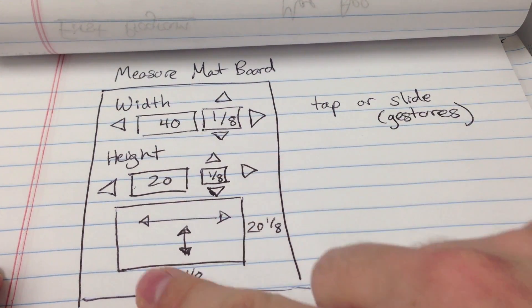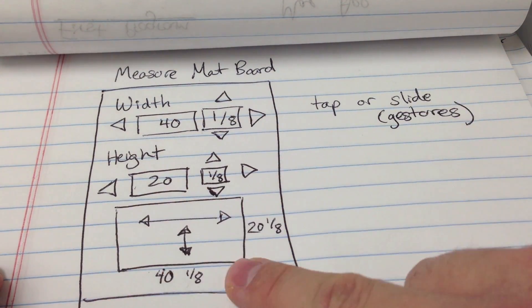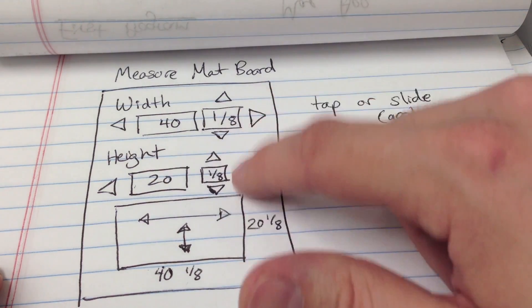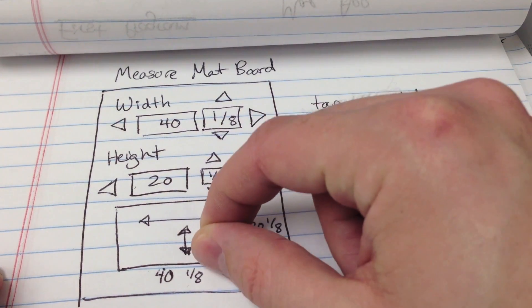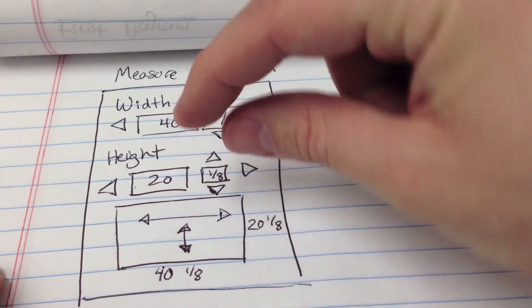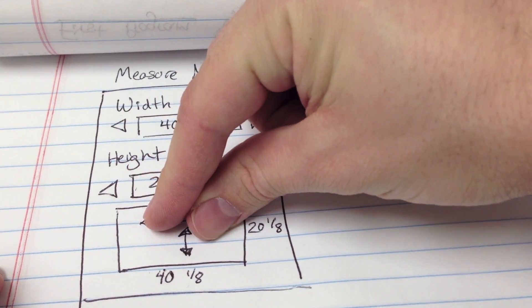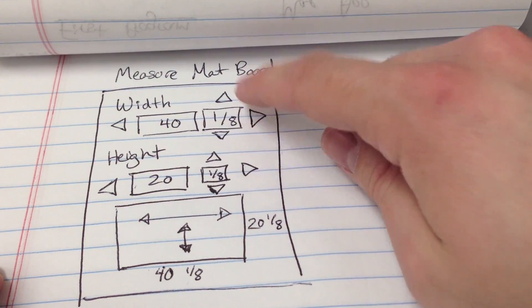Once we get the width and the height, we can look at the live preview that's going to be changing as we're modifying these values. We could also pinch down here to resize the bigger measurements and then fine-tune it on the top.